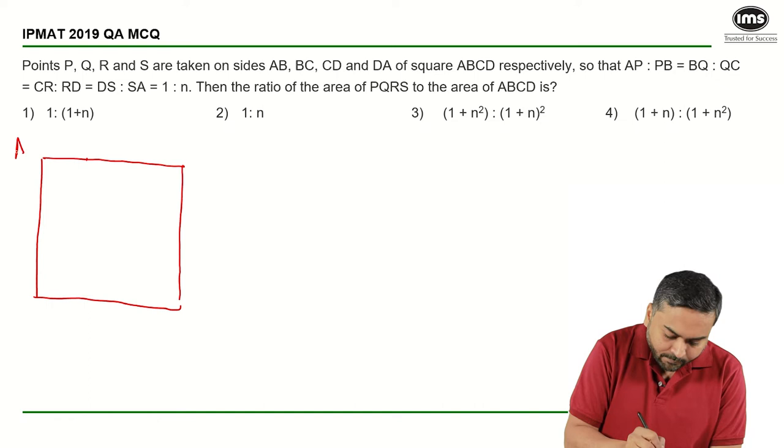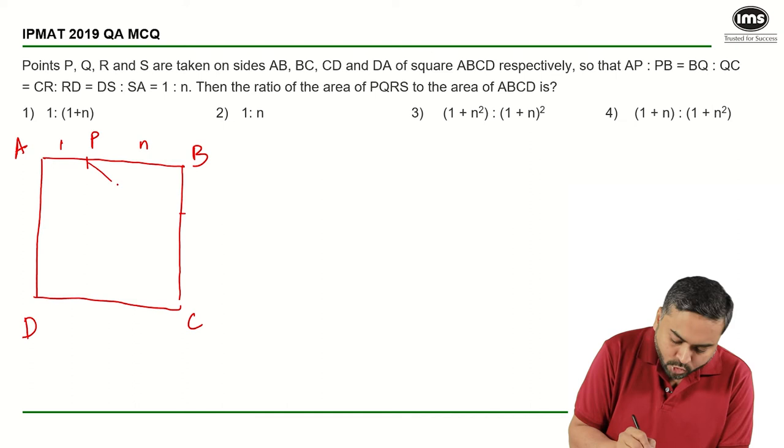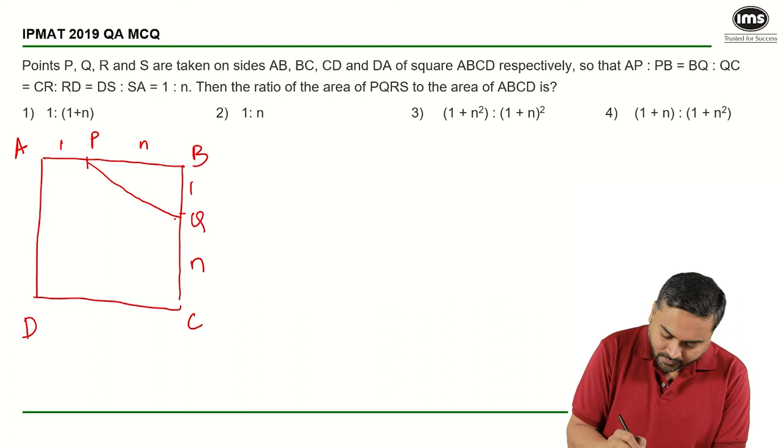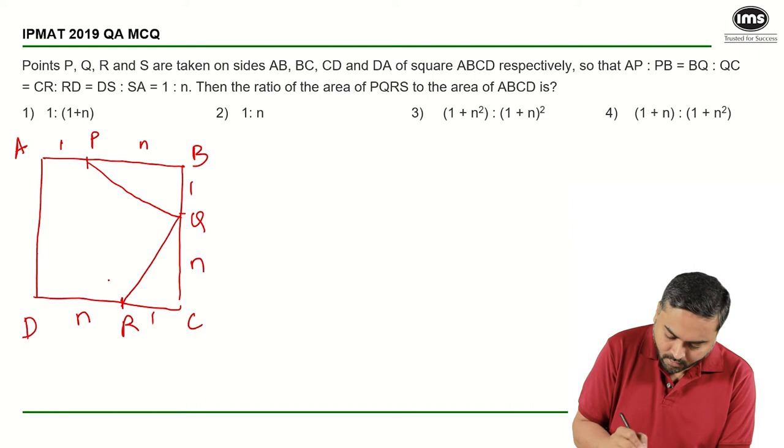I have P here. So AP to PB is in the ratio 1:n and then I have Q here, same BQ to QC is in the ratio 1:n and then CR to RD is in the ratio 1:n and then I will have this S here, this is my R and that is how it would look like 1:n.